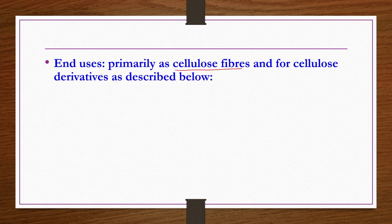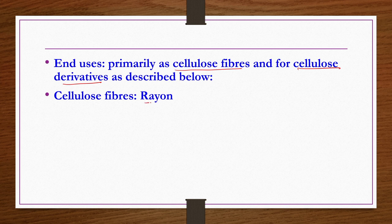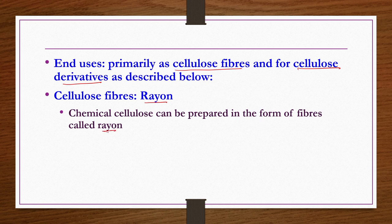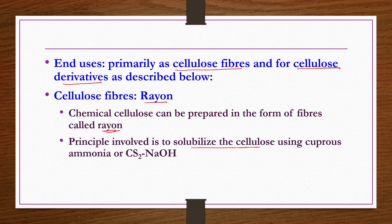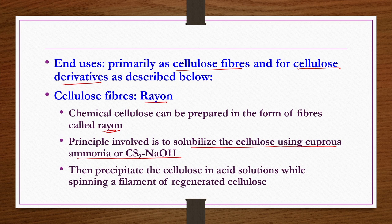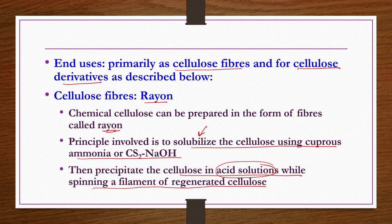Chemical cellulose is primarily used as cellulose fibers and for cellulose derivatives — most derivatives are either esters or ethers. For cellulose fibers, chemical cellulose can be prepared in the form of fibers called rayon. The principle involves solubilizing cellulose using cuprous ammonia or a CS2/NaOH mixture, then precipitating the cellulose in acid solutions while spinning a filament of regenerated cellulose. First solubilize chemical cellulose with cuprous ammonia or carbon disulphide and NaOH, then precipitate using acid solutions, then spin into filaments of regenerated cellulose — the spun regenerated cellulose is rayon.